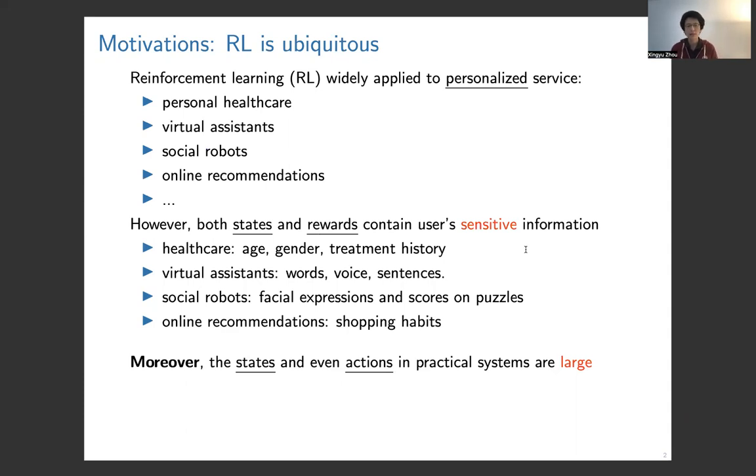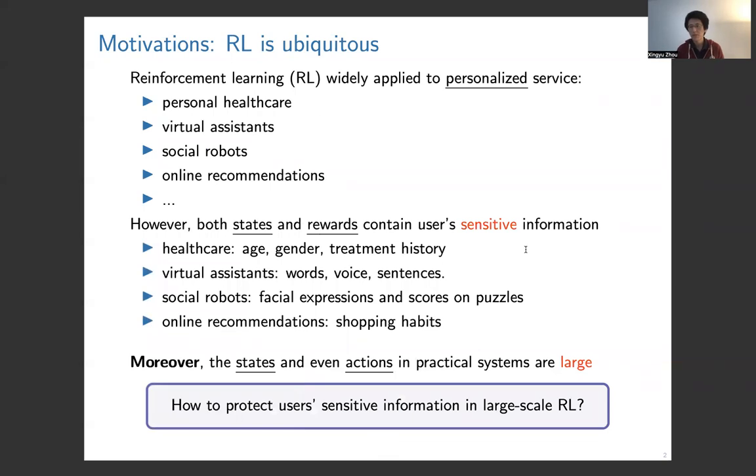And of course, in online product recommendations, the shopping habits will contain or reveal people's personal information. Moreover, the states and even actions in practical systems are often large. So all of this motivates us to consider the following important problem: how to protect users' sensitive information in large-scale reinforcement learning.